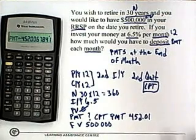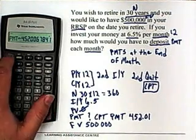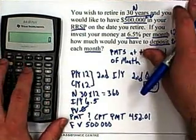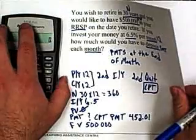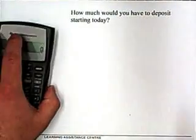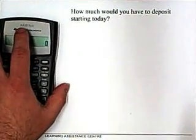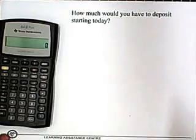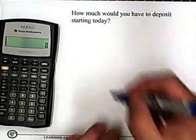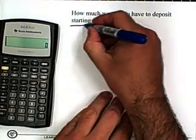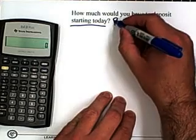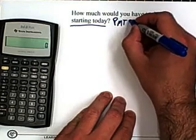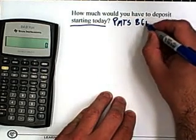This was if we made the payments at the end. Let's retry the question where we make the payments at the beginning of the year — that's what the second question is. How much would you have to deposit starting today? These last two words, 'starting today,' mean our payments have to be in begin mode.